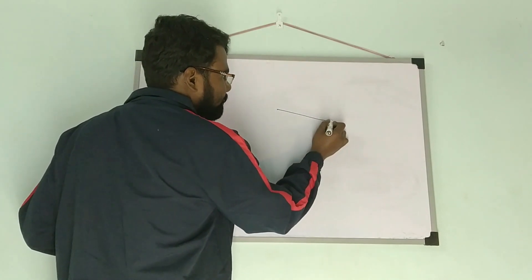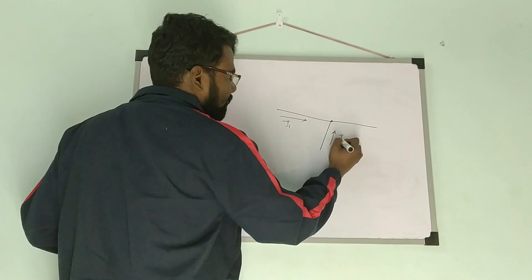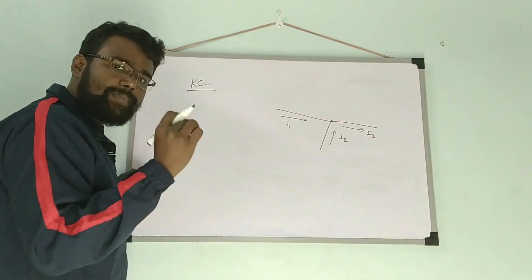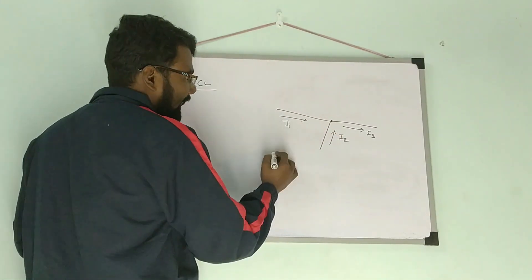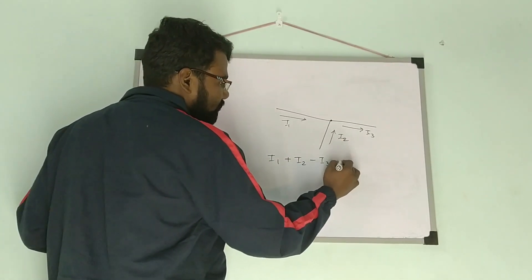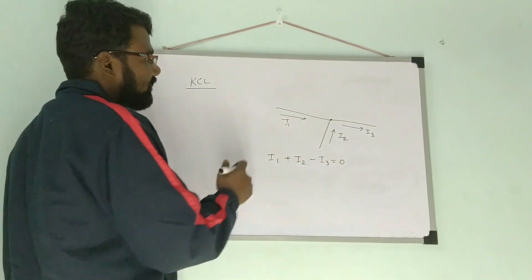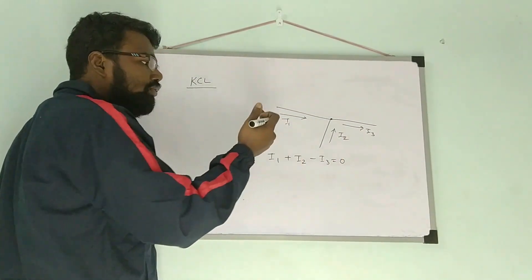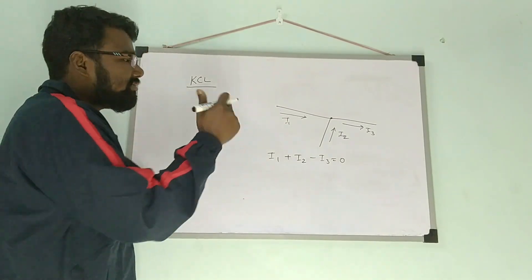Suppose this is a node with currents I1, I2, and I3. If I apply KCL at this node, then I1 plus I2 minus I3 is equal to zero. Why plus and minus? Because I1 and I2 are incoming to this node and I3 is outgoing. So I take incoming as plus and outgoing as minus.